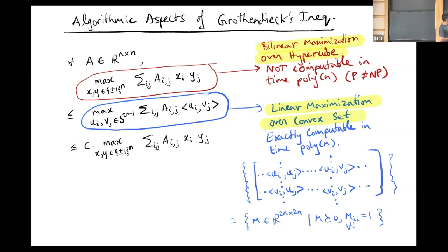This might at first seem surprising because the second quantity looks more complicated. But you can view it as linear maximization over a convex set. You look at the matrix of inner products of UIs with each other, UIs with VIs and so on, this 2N cross 2N matrix. The set of all such matrices is precisely the set of positive semi-definite matrices with diagonal entries equal to one. So it's a slice of the positive semi-definite cone. We could view this optimization as maximizing a linear function over the slice of the positive semi-definite cone, and this is an easy task.